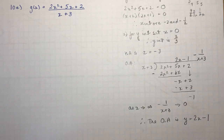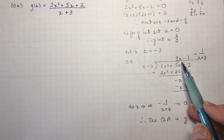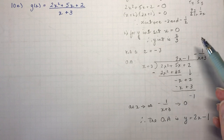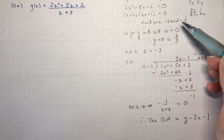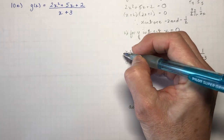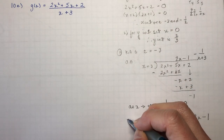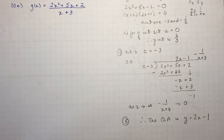The oblique asymptote is confirmed, and that remainder term went to zero. So I've now stated the x-intercepts, y-intercept, the vertical asymptote x = −3, and the oblique asymptote y = 2x − 1. That's all I can do without taking the derivative.